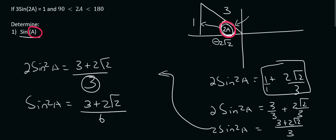We just need to square root. And so sin A is going to be the square root of 3 plus 2 root 2 over 6. And that's it.